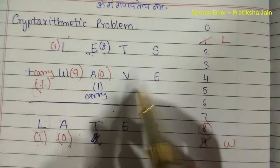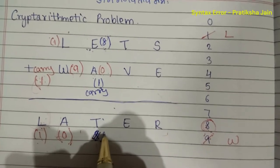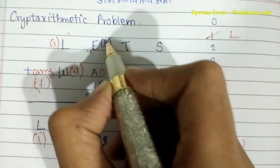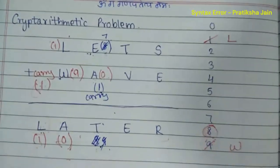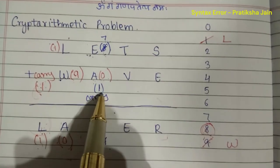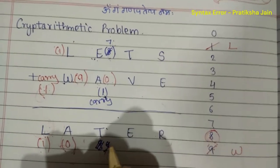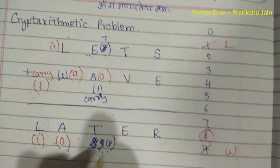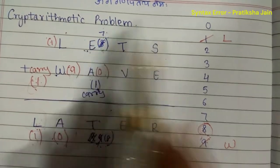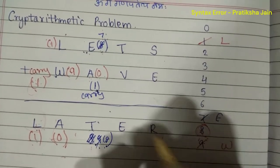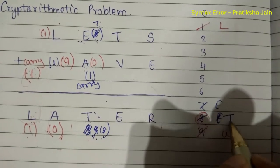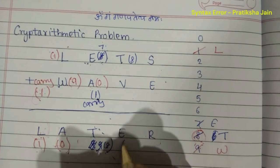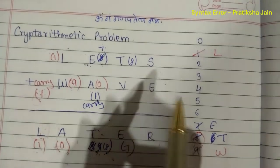If there is a carry and we keep E as eight, eight plus one gives nine — but nine is already assigned to W. So E can't be eight. Let's change E to seven. If E is seven and carry is one, then one plus seven gives eight. So T can be eight, since no letter has been assigned eight yet. Suppose E is assigned seven and T is assigned eight — here T becomes eight and E becomes seven.